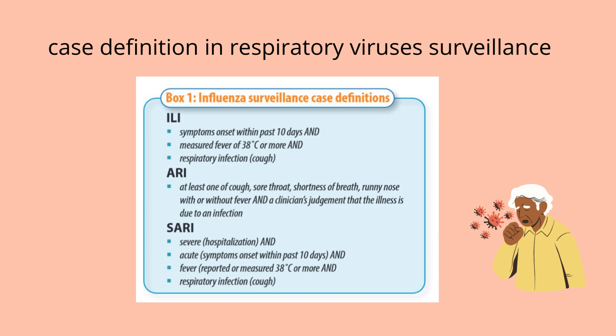For SARI, the person would have had a severe manifestation, which means that they would have required hospitalization, and they would have had symptoms with onset within the past 10 days, and they would have had a fever measured or reported at 38 degrees Celsius or more, and there is evidence of a respiratory infection, usually seen with a cough.